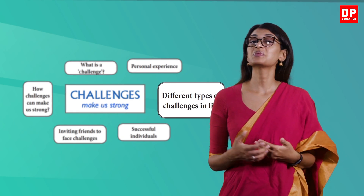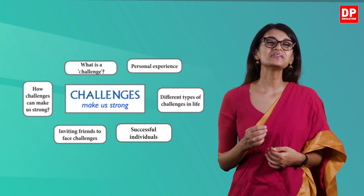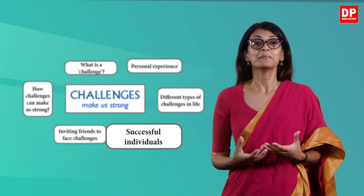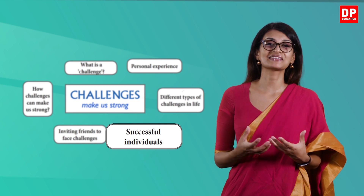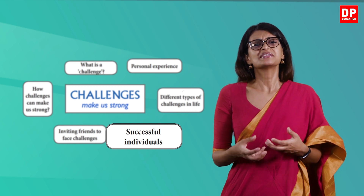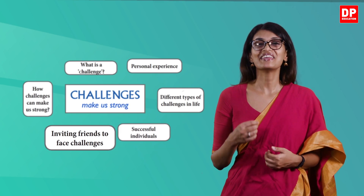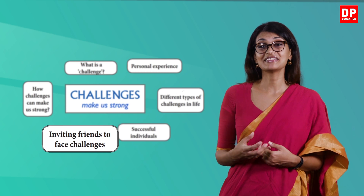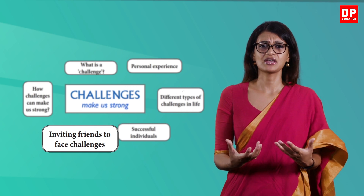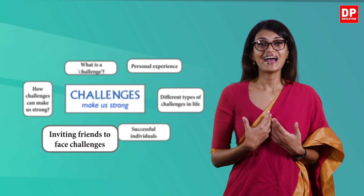Kamalish also wants to introduce his audience to different types of challenges in life. He has listed successful incidents — you can make any speech more exciting and credible by relating points to actual success stories. He can briefly talk about successful individuals who became strong by facing challenges. He has also decided to invite friends to face challenges, which creates a strong, invisible relationship between himself and the audience.